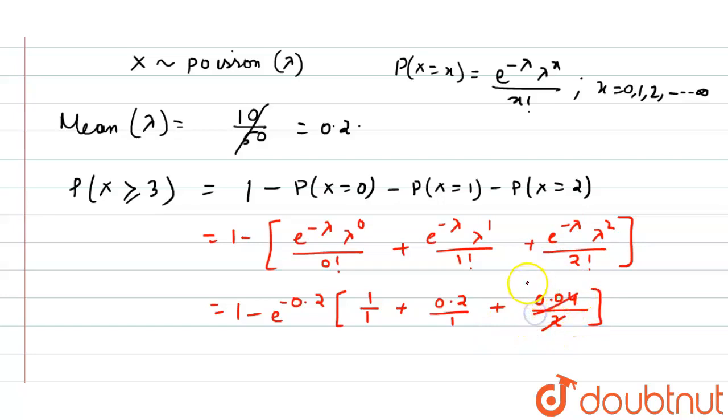So this one cancels out, so we get 0.02. So finally we get 1 minus 1.22 into e to the power minus 0.2. That is the correct answer.